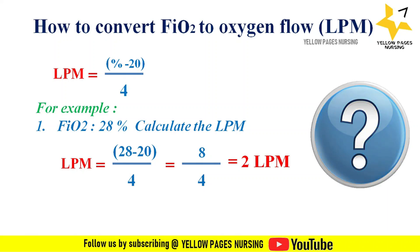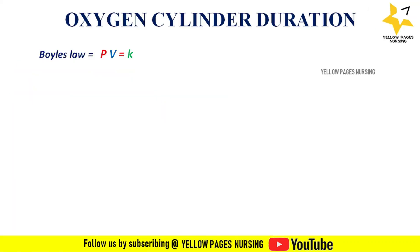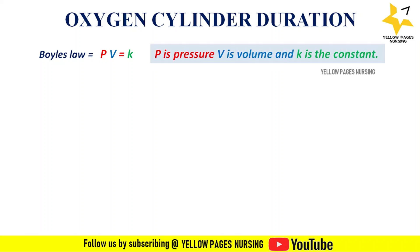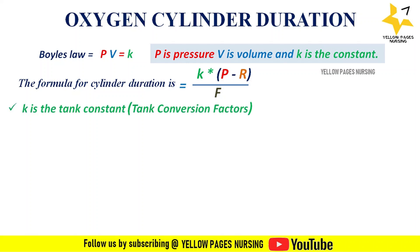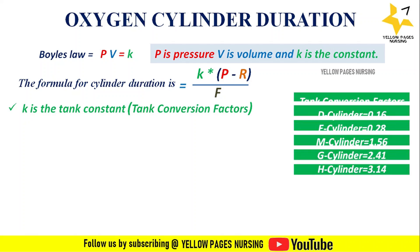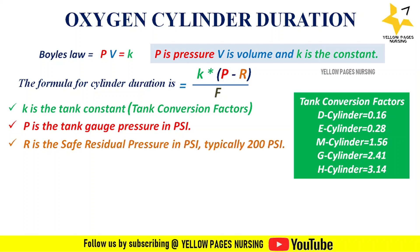Next comes calculation of oxygen cylinder duration. Based on Boyle's law (PV = k, where P is pressure, V is volume, and k is constant), the formula is: cylinder duration = k × (P − R) ÷ F, where k is the tank constant (conversion factor), P is the tank gauge pressure in PSI, R is the safe residual pressure in PSI (typically 200 PSI), and F is the flow in liters per minute.